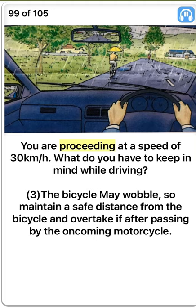You are proceeding at a speed of 30 km per hour. What do you have to keep in mind while driving? Three. The bicycle may wobble, so maintain a safe distance from the bicycle and overtake it after passing by the oncoming motorcycle. True.